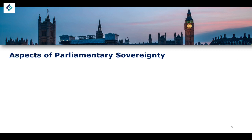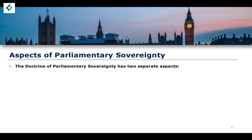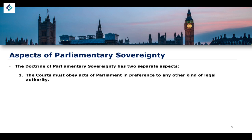Parliamentary sovereignty has two major aspects. The first is that the courts must obey acts of parliament in preference to any other kind of legal authority. Where parliament says explicitly a certain thing, it is not for the courts to disregard that provision. There are instances where the courts may interpret provisions established by parliament — that is perfectly within the remit of the UK judiciary. Parliament sometimes passes law that is very difficult to understand, and so the courts must come up with a clear understanding of what the law actually means.